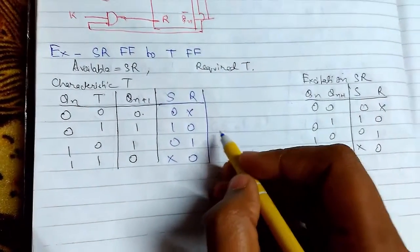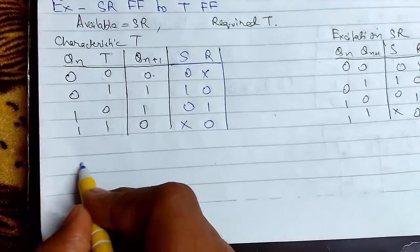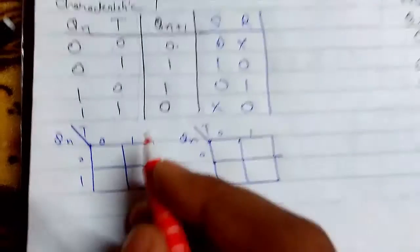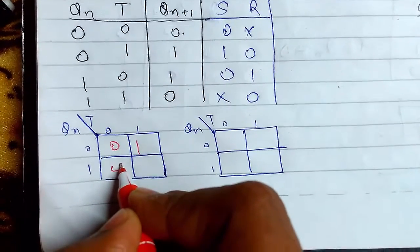We need to make the Karnaugh map of it. So let us make it. We will now just put the values here. This will be 01 cross 0.